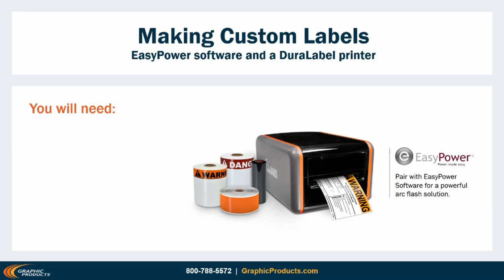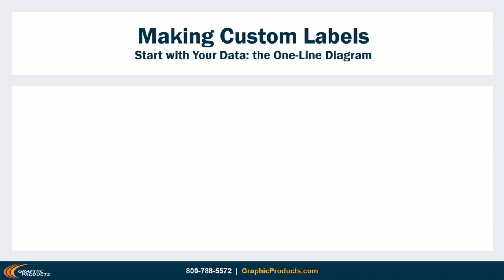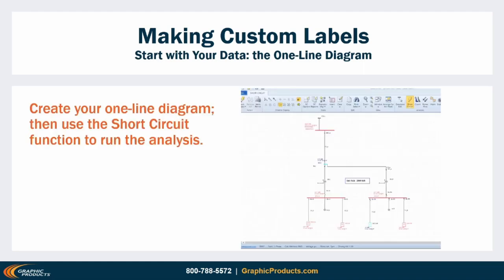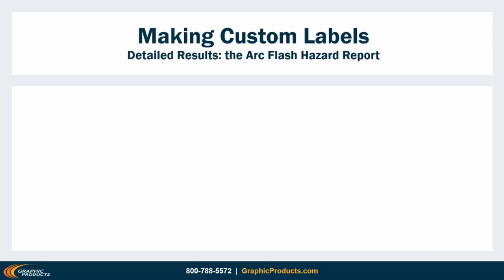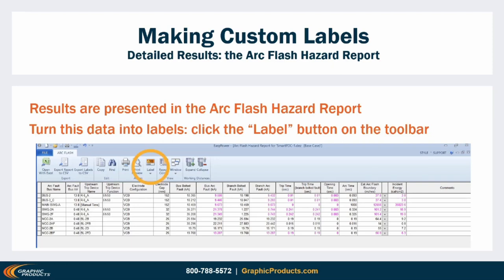Now that we've covered the context for arc flash labels, the requirements that apply to them, and how to make decisions about what goes on them, let's get practical. To make labels, you need your data and some way to arrange that data for printing, then a printer and label stock. I'll show you the steps to use EasyPower for the data and software parts, and a Duralabel printer and supplies for the physical end. In EasyPower, you'll create your one-line diagram, fill in the details for your facility, then use the short circuit function to have the program run its analysis and do all the math. When calculations are complete, you can view results in a table format as the program's arc flash hazard report.